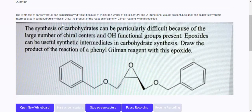The question is: the synthesis of carbohydrates can be particularly difficult because of the large number of chiral centers and hydroxy functional groups present. Epoxides can be used as intermediates. Draw the product of the reaction of a phenyl Gilman reagent with this epoxide.